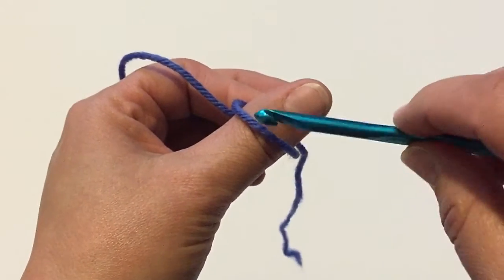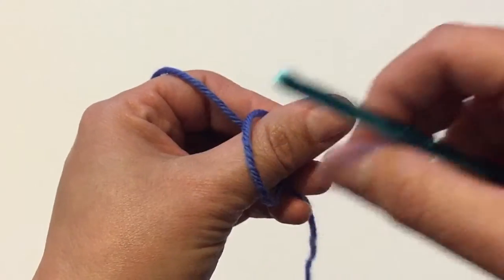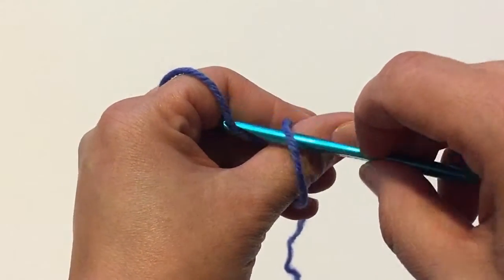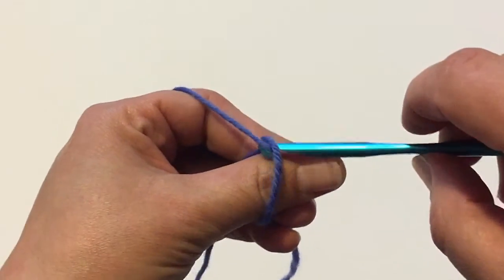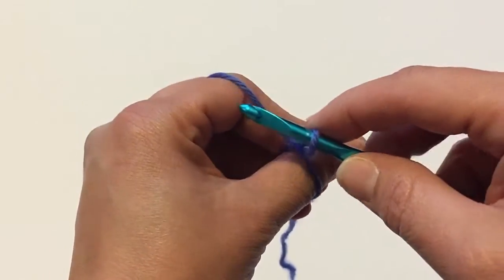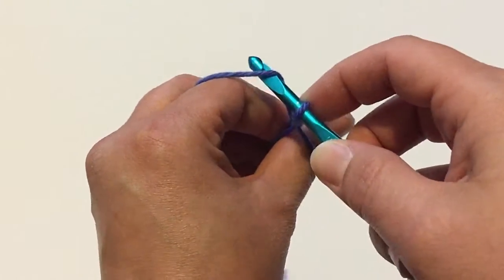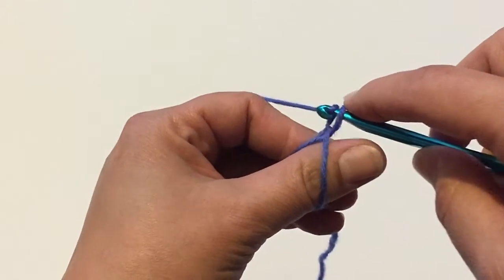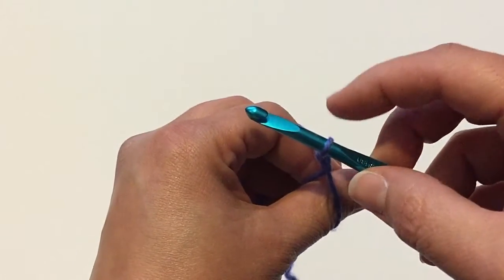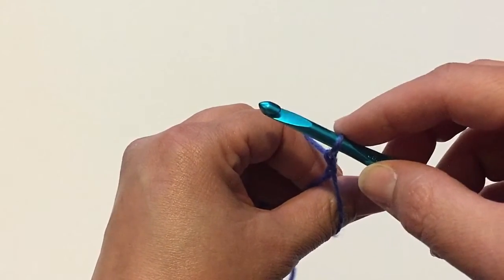Then you grab your crochet hook and you insert your crochet hook through that loop and you grab the yarn pulling it through the loop. Then you're going to pick up the yarn again and pull it through that loop you had just put on your crochet hook. You have now cast on one stitch.